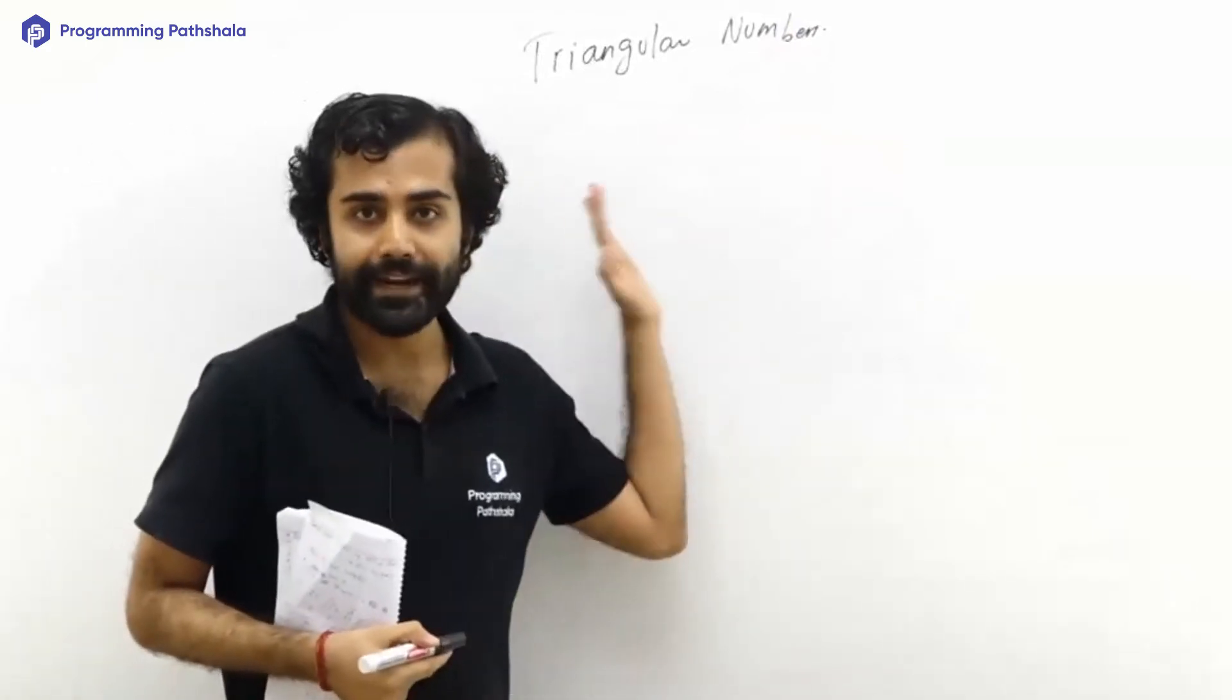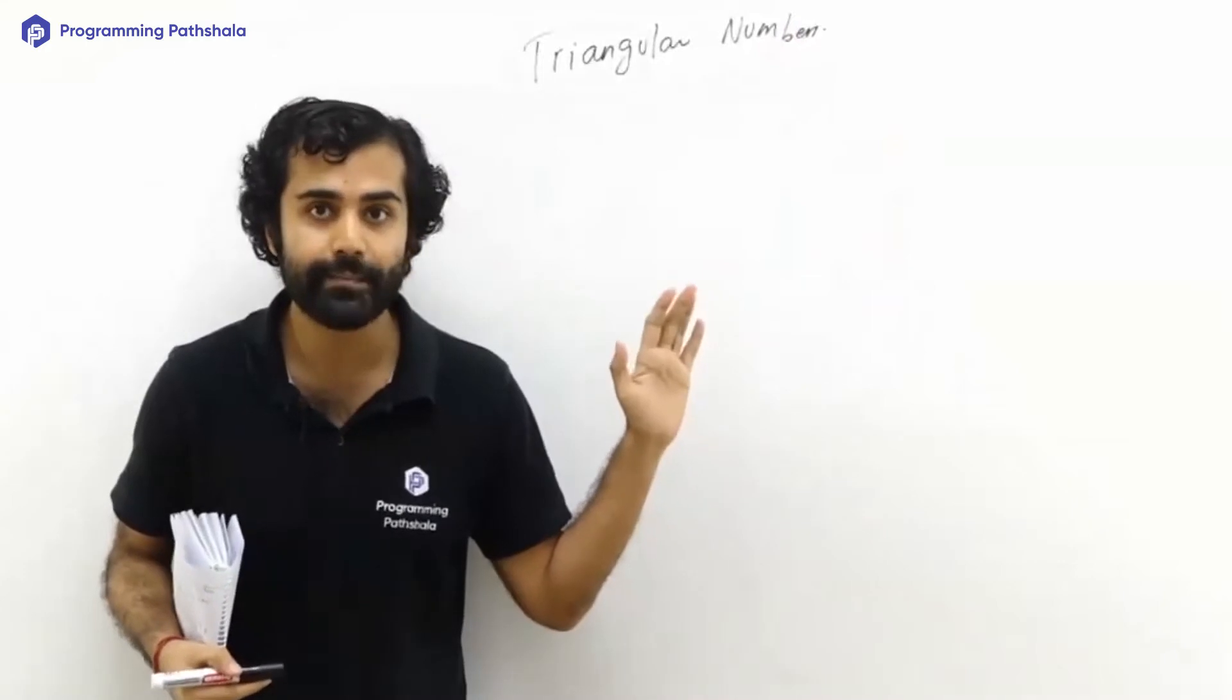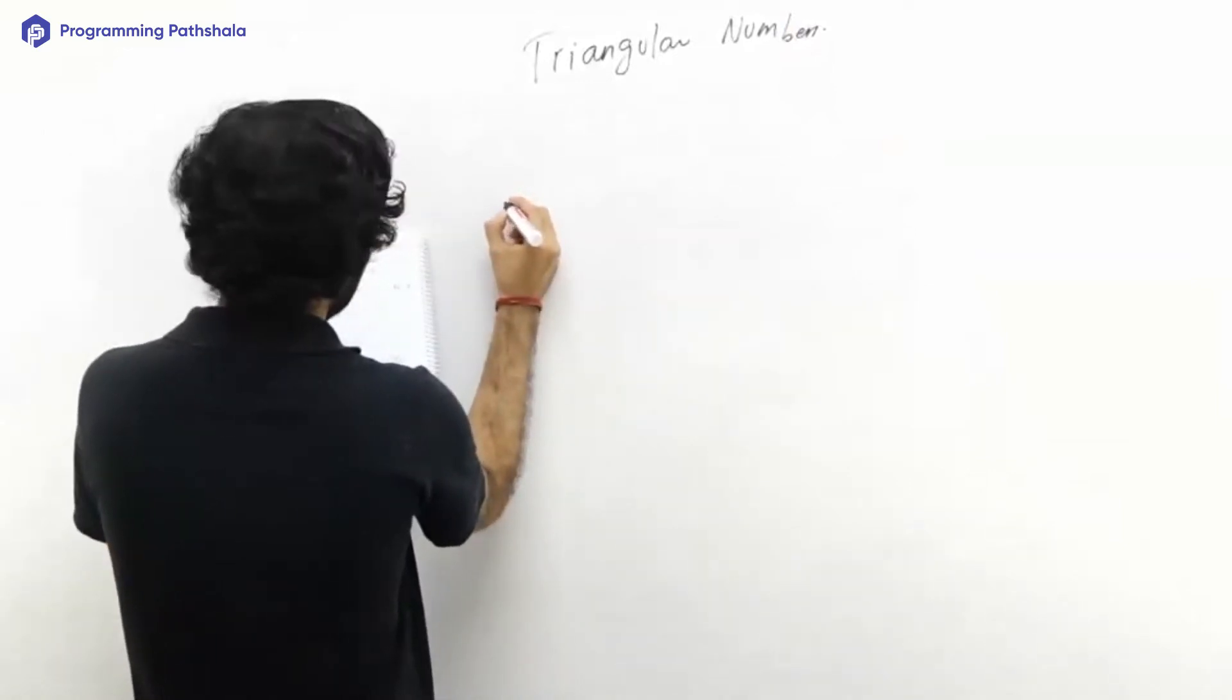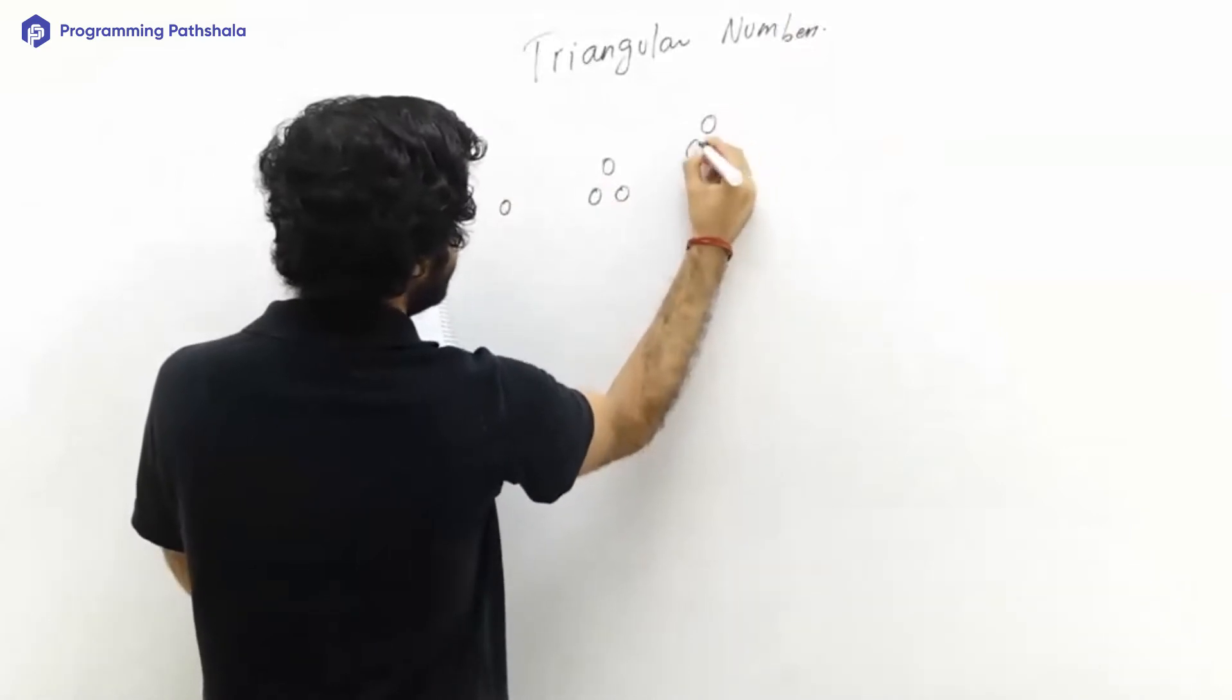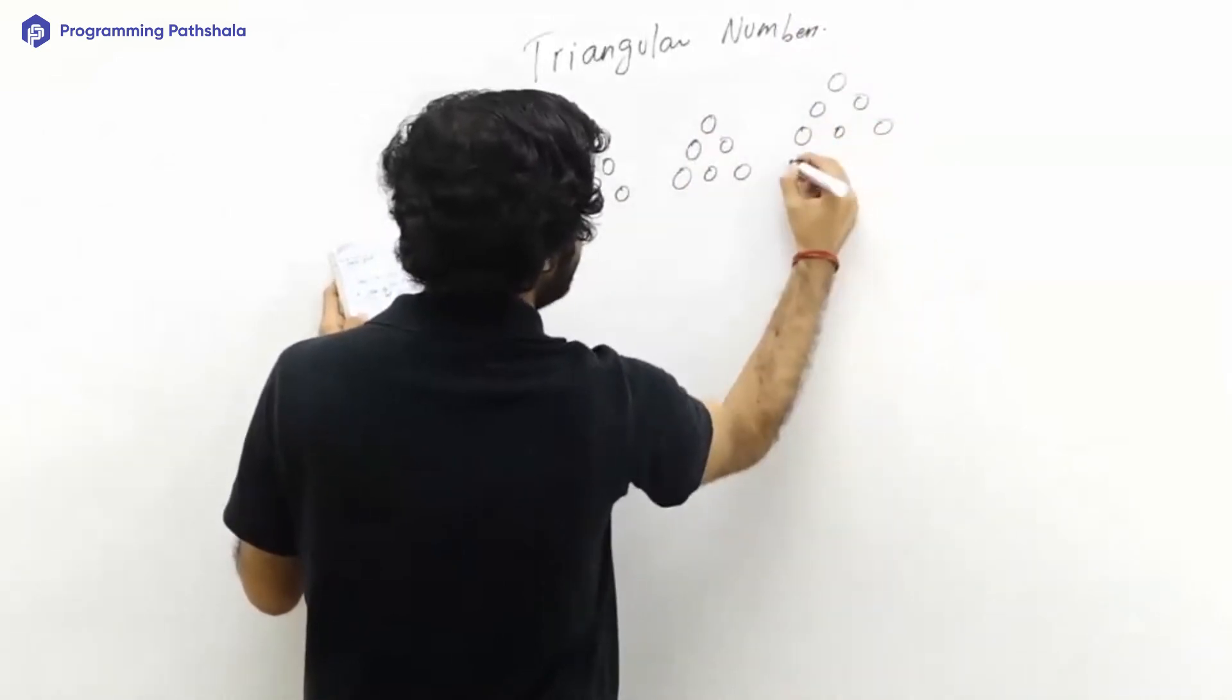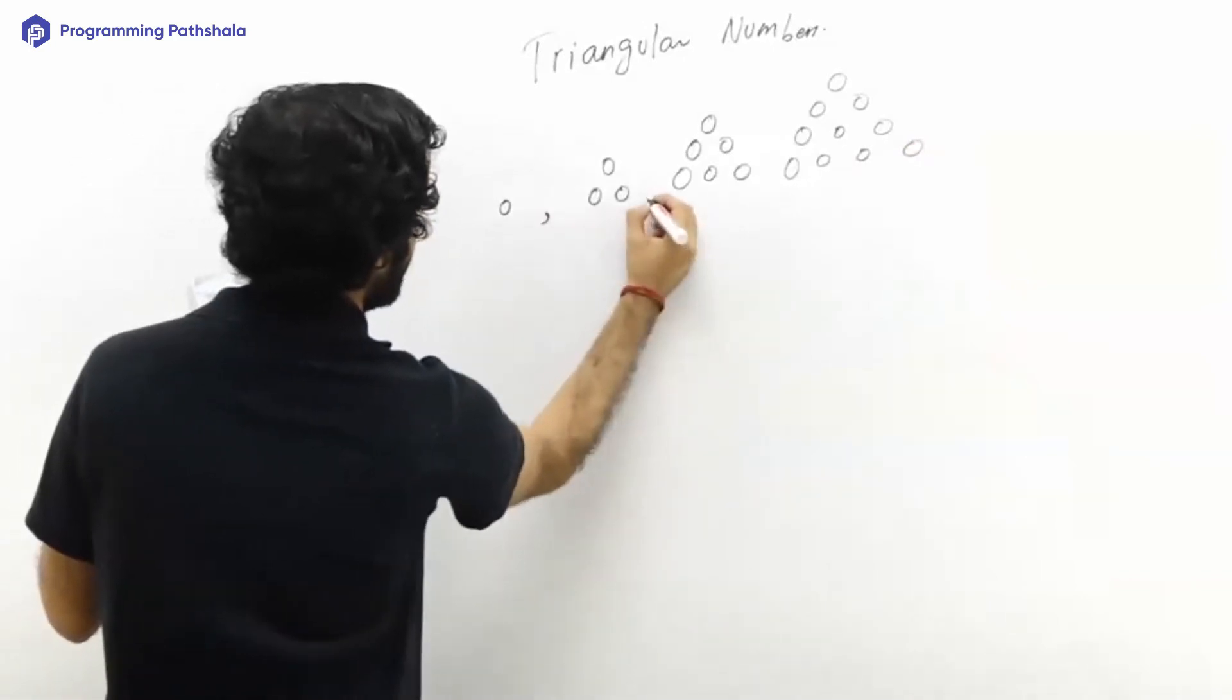What I'll do is I'll draw some diagram on the board. Keep looking very carefully. Looking at that diagram itself maybe you can get to know what it is. So let me draw a dot over here, then let me draw these many dots here, and let me draw these many dots here, and then even more dots here.